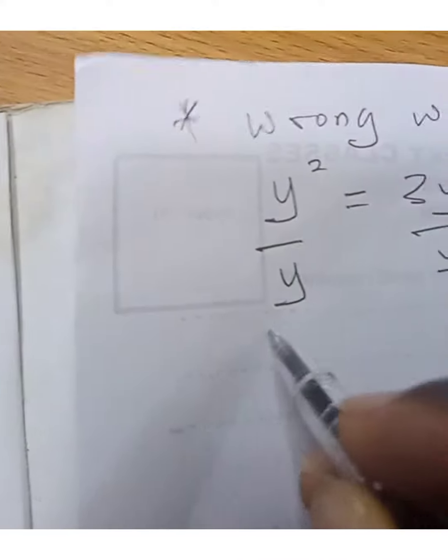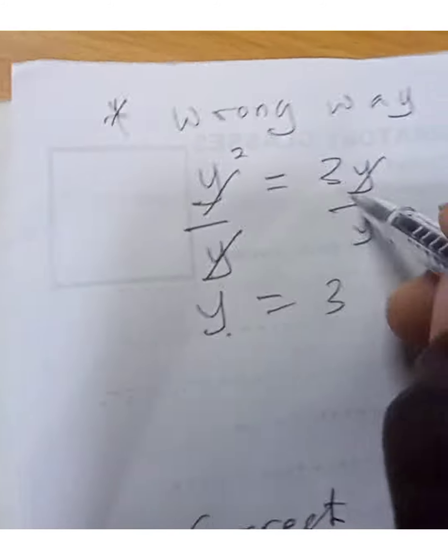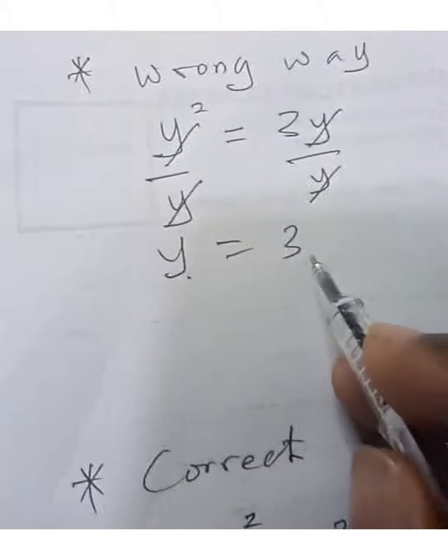So for some persons they would just come and divide it by y, and say y equals 3. That is by cancelling this, cancelling this, remaining there, then cancel this one, cancel this one, remaining 3.